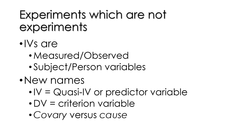So the independent variables are measured or observed — we are not changing anything, just measuring, observing, and recording what we see. These independent variables often become subject and person variables, such as gender or race — variables associated with a person. Other subject variables like self-esteem, extroversion, or openness to experience need to be measured using some type of psychometric test.